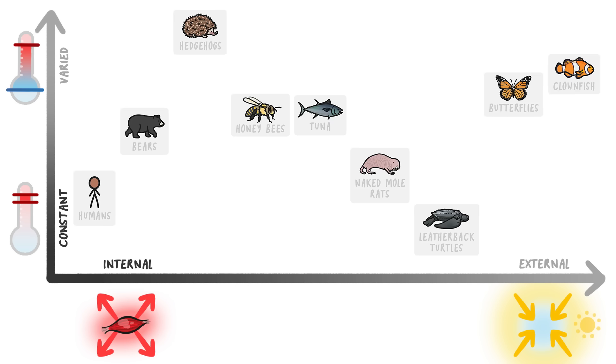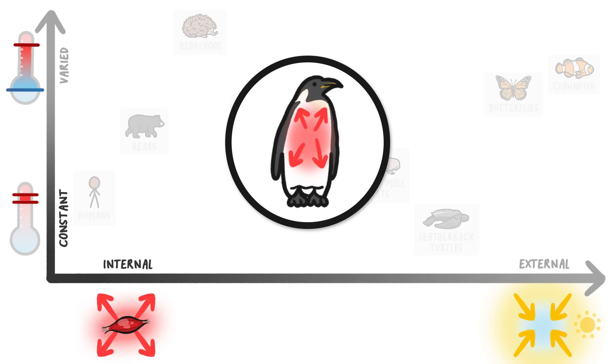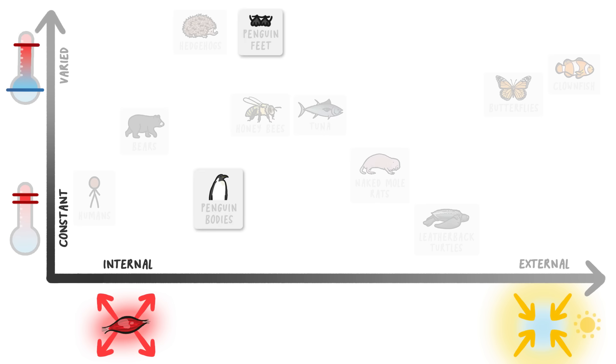But wait, there's even more weirdness. Penguins, for example, generate heat internally and keep most of their bodies warm at all times. But they let the temperature in their feet fall to just above the ice that they stand on, which means that, on this chart, their feet are here while the rest of their bodies are over here.